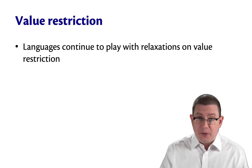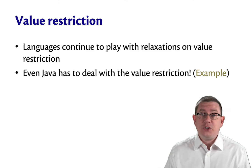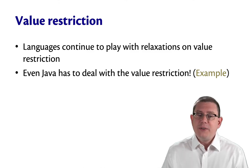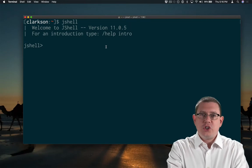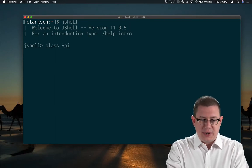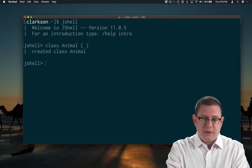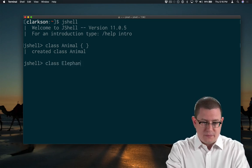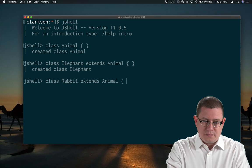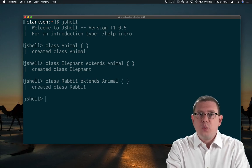It's not just an OCaml thing though, by the way. And it's not even just a functional programming thing. Even Java has to deal with the value restriction. Suppose we open JShell and create a class to represent animals, and then two other types of animals, elephants and rabbits. Now let me create an array of rabbits.